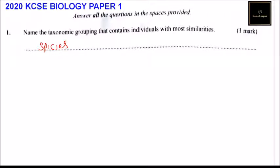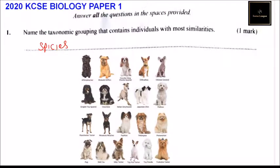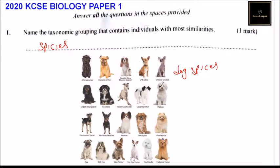As another example, I'll show you dog species. We have dog species here — all these are dogs with different names. They are all dogs, but of different species and different names, as you can see on the board. So that's how you answer that question and get yourself one mark.